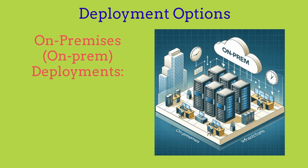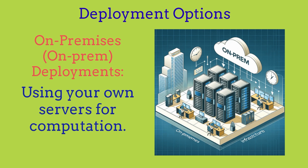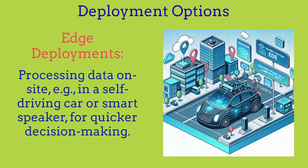For on-premises deployments, you can create your own server in your own home or company and use that for computation — you can upload your project onto a server inside of your own company or even your own house. In edge deployments, you process data on-site: you get the data, look at it, and spit out a response right away. Examples include self-driving cars, where you immediately scan the environment and give a response, or a smart speaker for quick decision making.